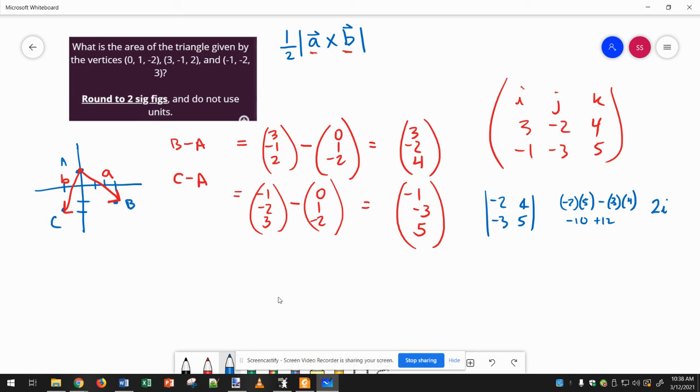Let me just double check that. Negative 10 minus negative 12. Yep, looks good. And now the J component, we subtract. So ignore the J column. We get 3, 4, negative 1, 5. So that's 15 minus negative 4, so that's 19J. Double check that. 15 minus negative 4. Okay.